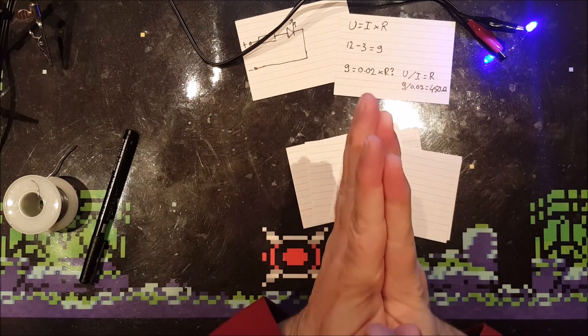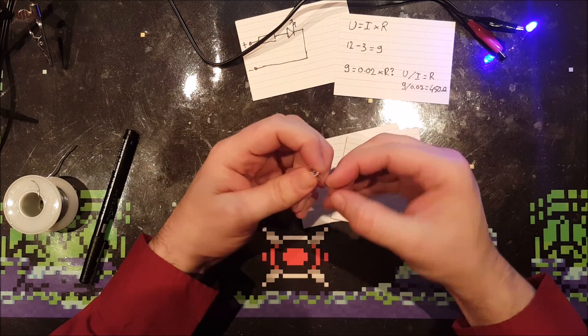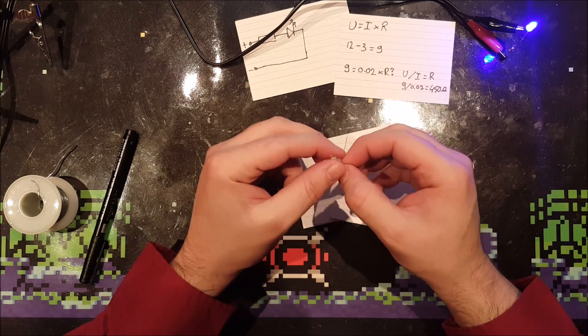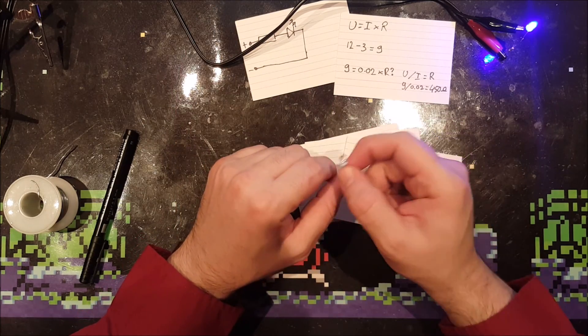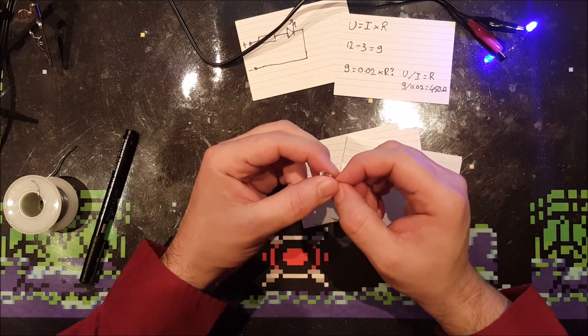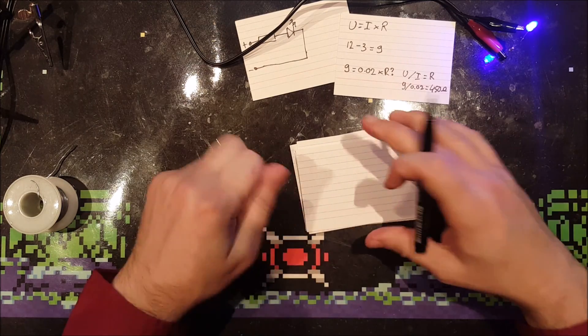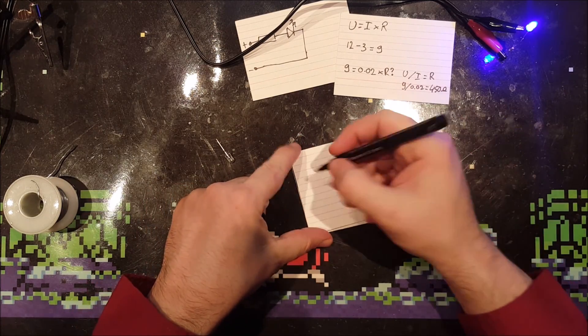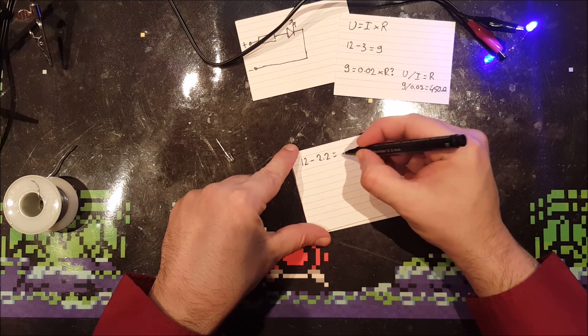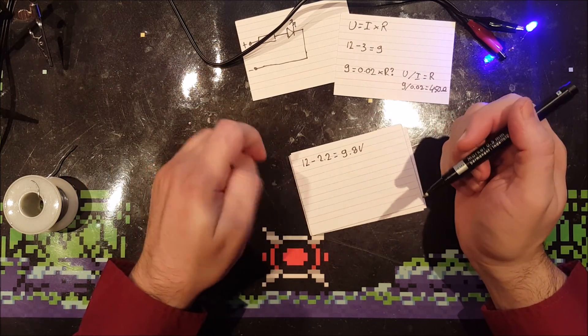Let's do another example. I've got a red LED. Red LEDs require a little less voltage than these 3 volts. This probably requires 2.2 volts. Let's make some calculations again. The power supply still is 12 volts. 12 volts minus the 2.2 of the LED is 9.8 volts to drop for the resistor.